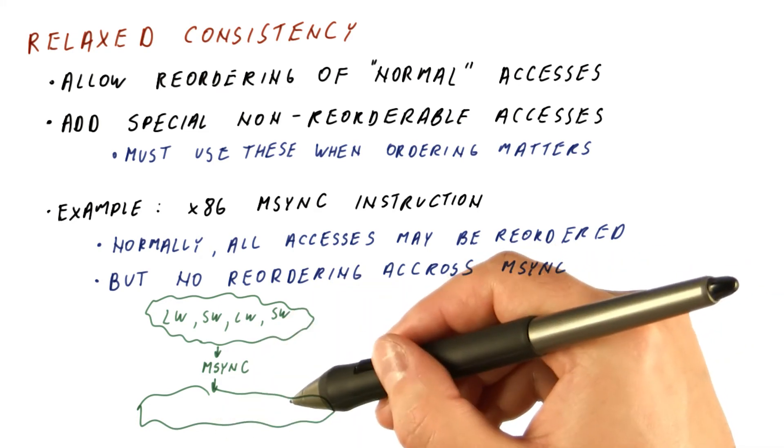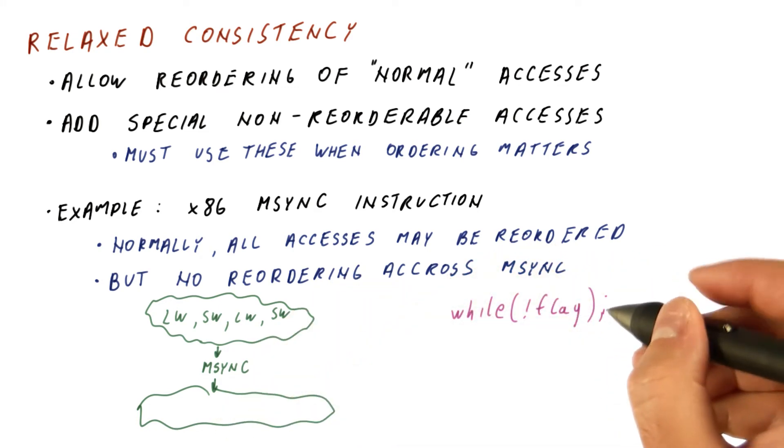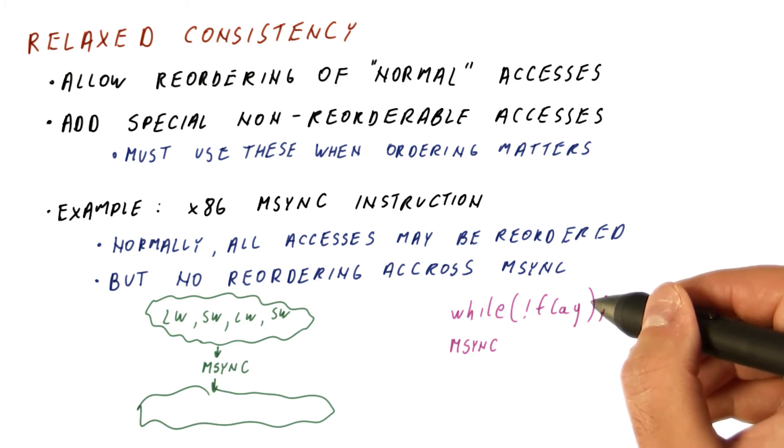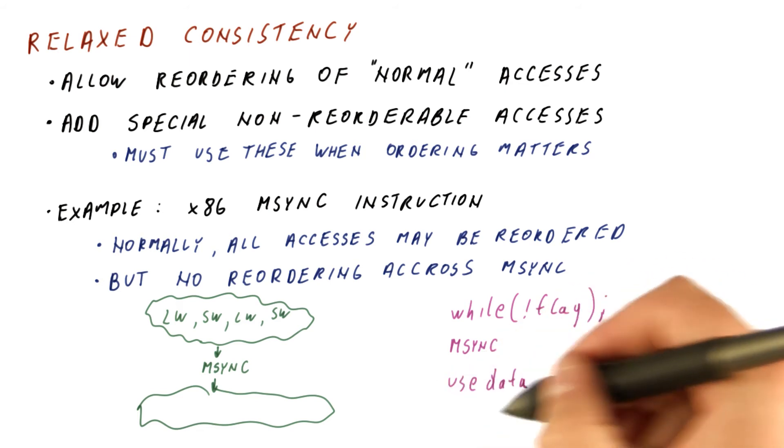So how does that help? It helps because now we can write flag synchronization correctly. The correct wait for a flag now includes an mSync instruction. It basically says that wait for the flag to become zero, make that happen, and then use the data.